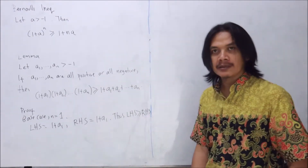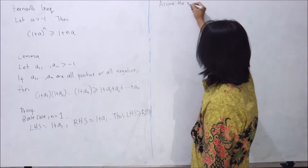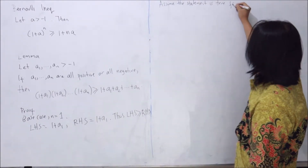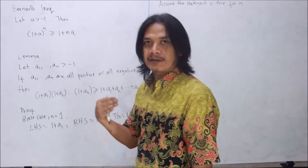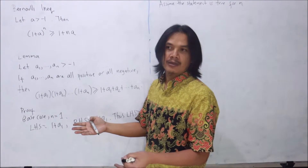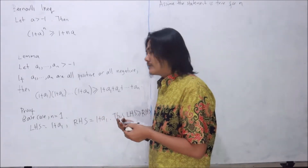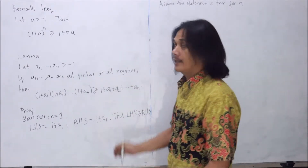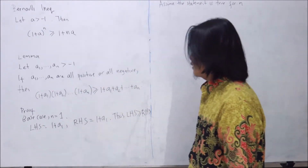Now let's assume that the statement is true for n. Before we try the general n, we could check: can we prove the case n equals 2 from n equals 1, and then n equals 3 from n equals 2? That approach might lead us to a general proof, so let's go for the general case right away.